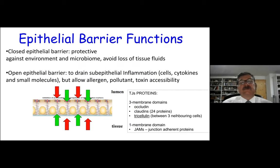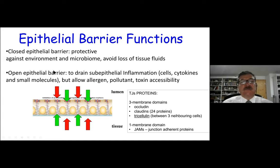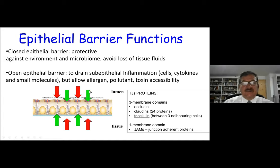If we summarize the functions of the epithelial barrier: a closed epithelial barrier is the normal case, protective against the environment and microbiome, and prevents loss of tissue fluids. But if the barrier opens, it can sometimes be useful when there is too much inflammation in the sub-epithelial area — cells, cytokines, and small molecules drain to the lumen. But at the same time, allergens, pollutants, and toxins become accessible to deeper tissues.